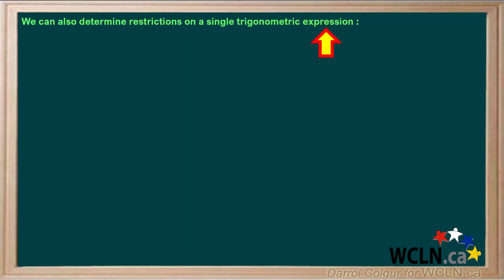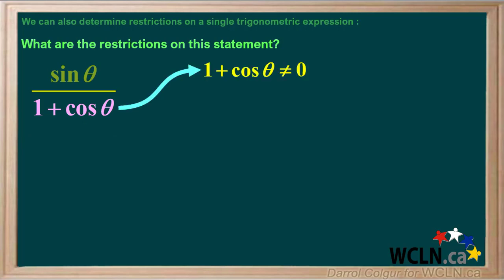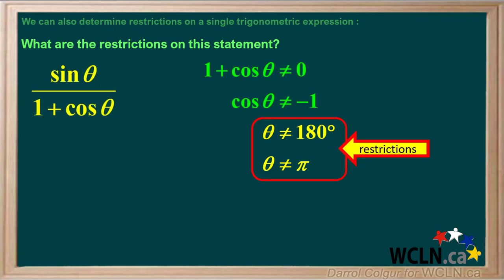Restrictions can be found for trig identities and trig equations, but we can also determine restrictions for a single trigonometric expression. We're asked for the restrictions on the expression sine theta over 1 plus cosine theta. The denominator of the expression is 1 plus cosine theta, and the denominator cannot be equal to zero, so 1 plus cosine theta cannot be equal to zero. This means cosine theta cannot be equal to negative 1. The cosine of 180 degrees is equal to negative 1, so theta cannot be equal to 180 degrees. 180 degrees is pi radians, so theta cannot be equal to pi radians. So the restrictions on this statement are theta is not equal to 180 degrees and theta is not equal to pi.